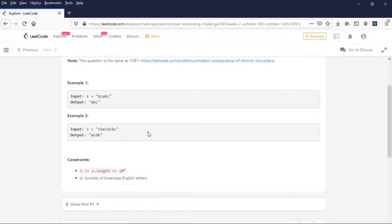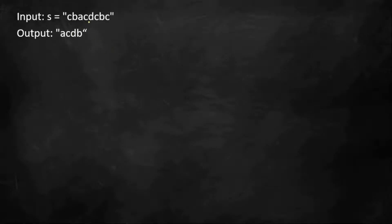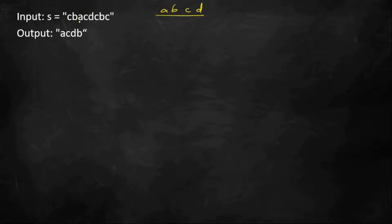Let's look into example 2. Here we have CBACDCBC. The unique letters are A, B, C, and D. When they say lexicographical order, they mean the output character order should not change from the original string. At the same time we should select unique characters such that the smallest in lexicographical order is selected first. If I don't change the order but still want to select all unique characters, what are the different outputs I can get?